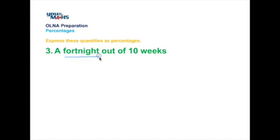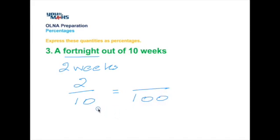In this next question, we'll convert fortnights to weeks. So 1 fortnight is 2 weeks. And we're working out 2 out of 10 as a percentage. So one way to do that is to look at those numbers and say, can we make it out of 100? 10 multiplied by 10 equals 100. So we need to do the same thing to the top line. 2 times 10 is 20. And that means we've got a result of 20%.